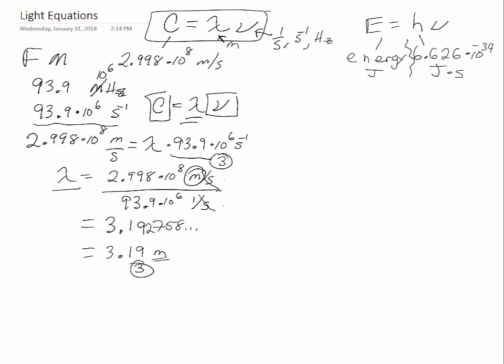Let's stick with the same equation and flip it around for a different question. A green laser pointer has a wavelength of 532 nanometers. What is the frequency of this wavelength of light?